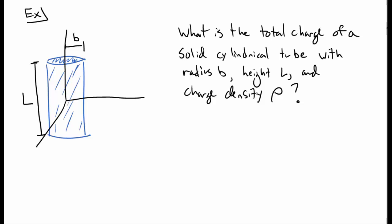Let's consider another example, a solid cylindrical tube with a radius b and a height l and some uniform charge density rho. So we want to take a small cube. The volume of this small cube we denote by d tau, and that cube has length in the s direction, the phi direction, and in the z direction.